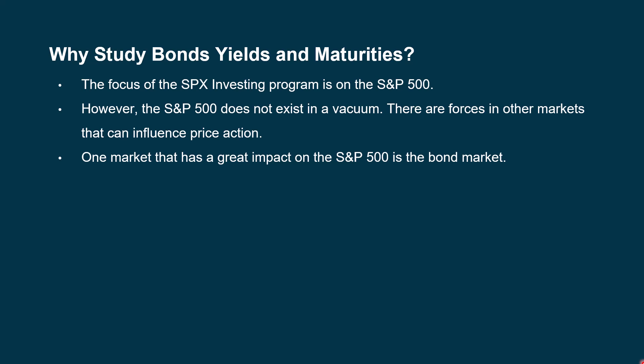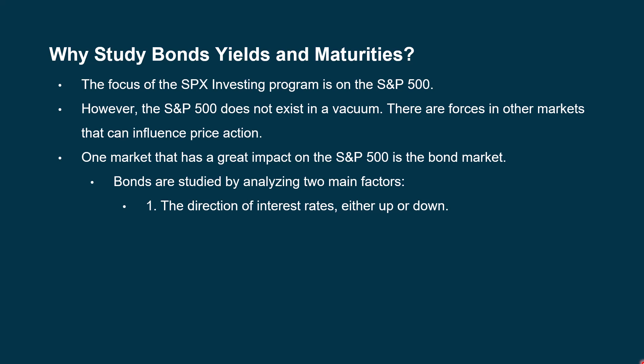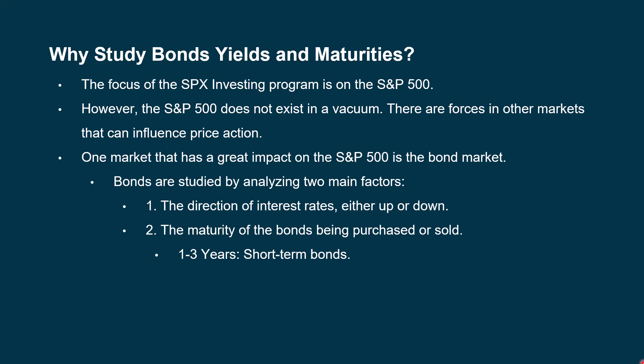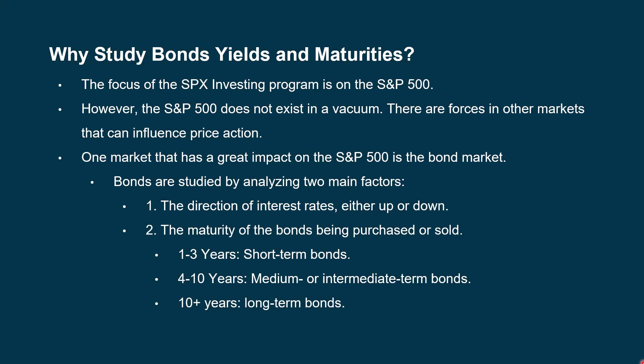One market that has a great impact on the S&P 500 is the bond market. Bonds are studied by analyzing two main factors: the direction of interest rates — whether they're going up or down — and the maturity of the bonds. There are 30-day bonds, 90-day bonds, 30-year bonds, and everything in between. We look at one- to three-year bonds, considered short-term; four- to ten-year bonds, considered intermediate-term; and anything over ten years is a long-term bond.